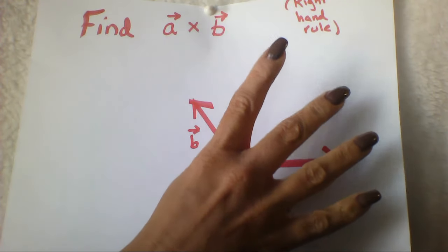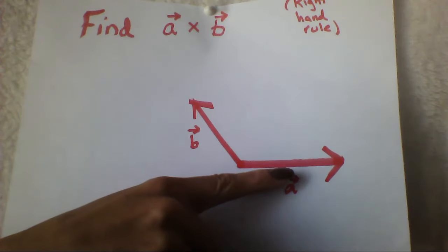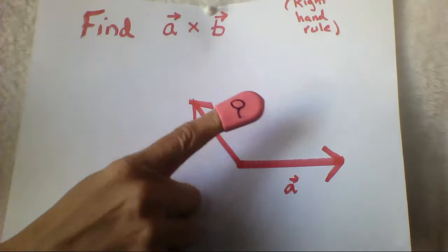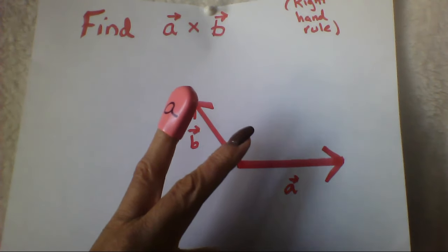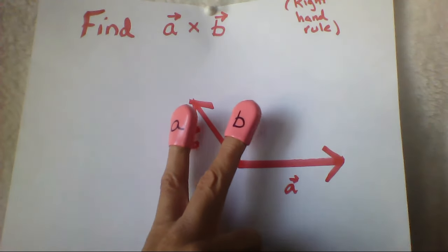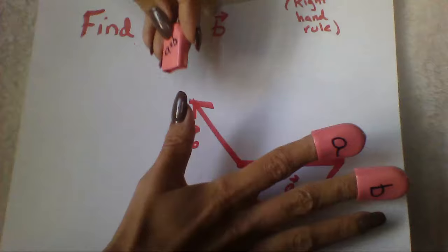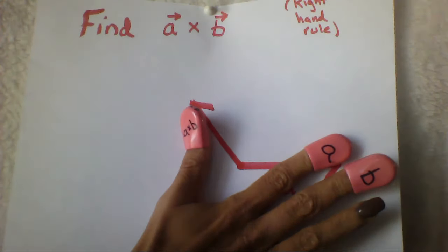The second finger that I have is going to point in the direction of A. My third finger needs to point in the direction of B. And my thumb is going to tell me the direction that A cross B is going in.